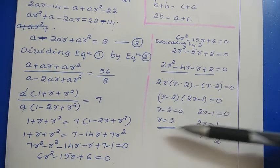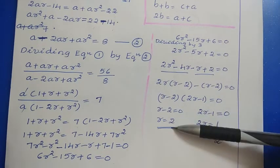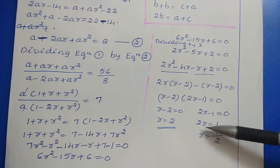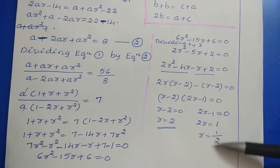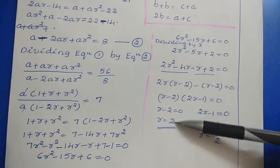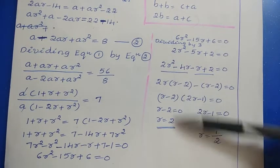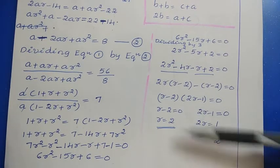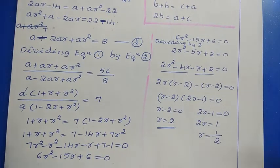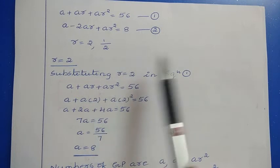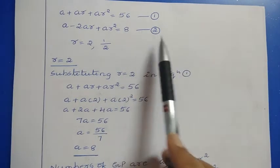So R minus 2 equals 0 gives R equals 2, and 2R minus 1 equals 0 gives R equals 1/2. We have two values for R: R equals 2 and R equals 1/2. Now substitute each value into equation 1 to find A.